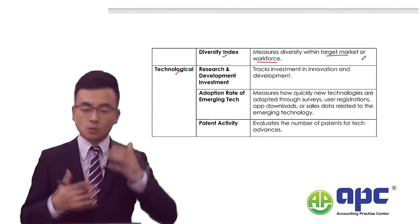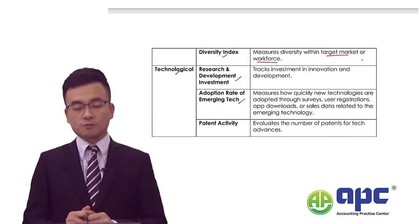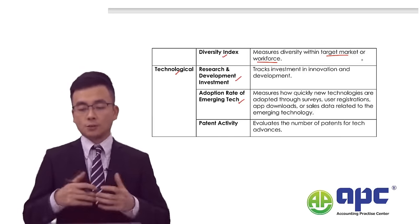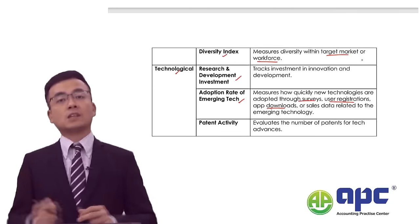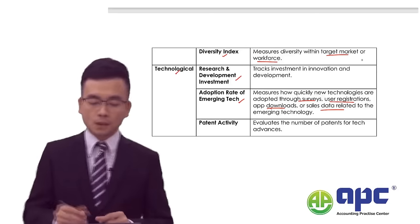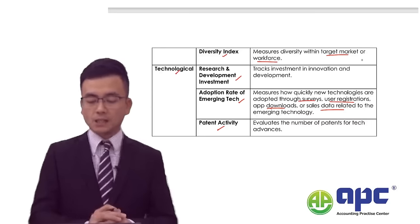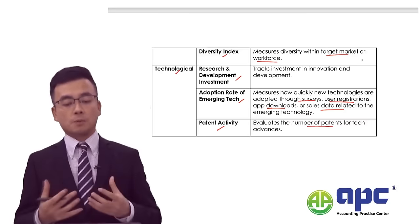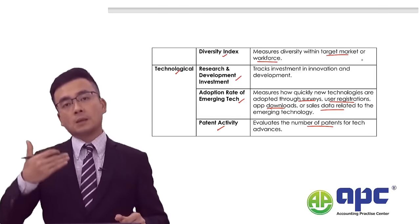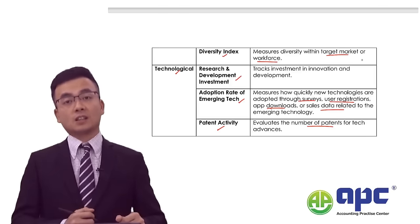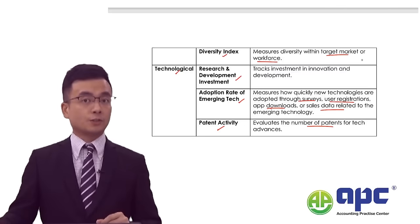For the technological side, we can check the R&D spend. We can also check the adoption rates of emerging technology — through surveys, user registrations, app downloads, and sales data related to the latest technology products we are selling. We can also check patent activity — evaluating the number of patents for technical advancement. If we have lots of patents, we are keeping track of the technological side and staying in line with market trends.